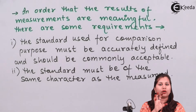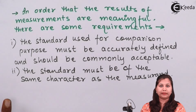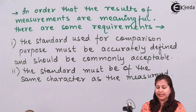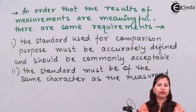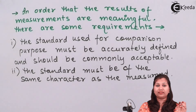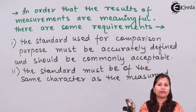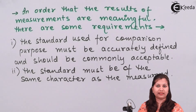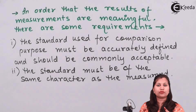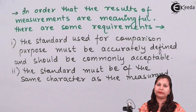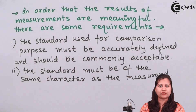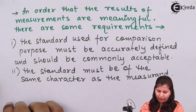The second requirement is that the standard must be of the same character as the measurand. If we are measuring length, we take a ruler as the standard. We cannot take a 1 kg mass as a standard when measuring length, because we are measuring length, not mass. If we are measuring mass, then the standard should also be a mass. The standard must match the type of quantity being measured.